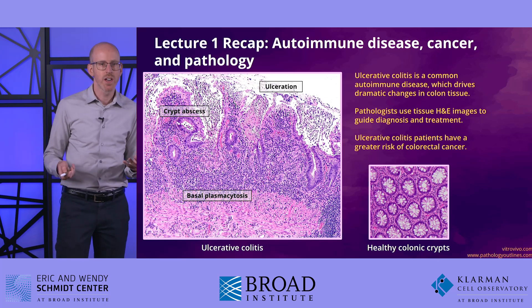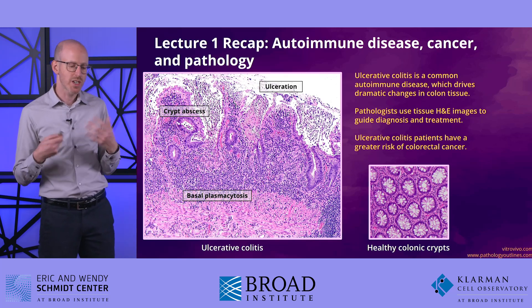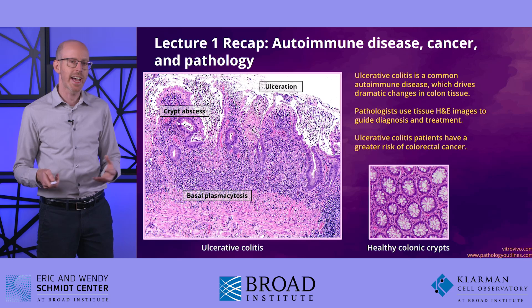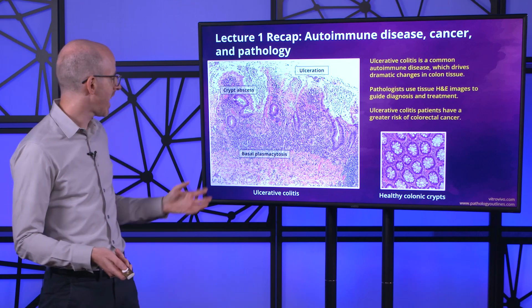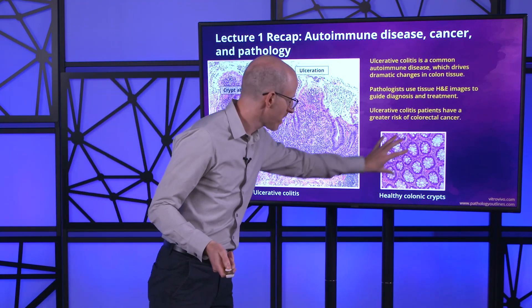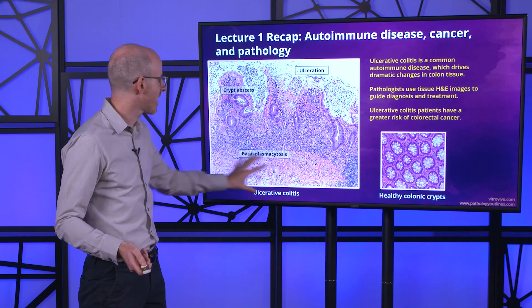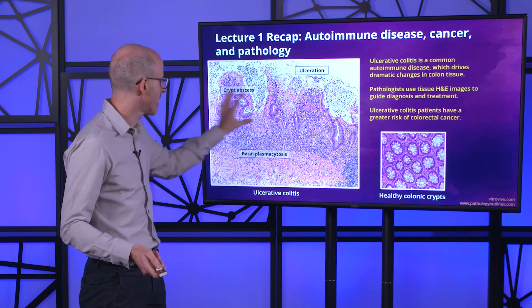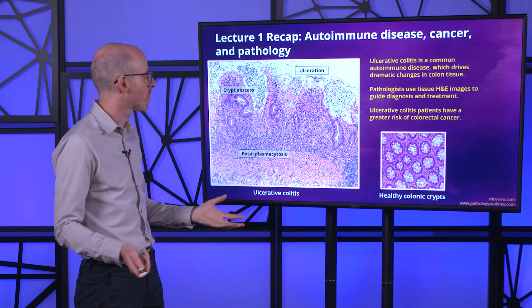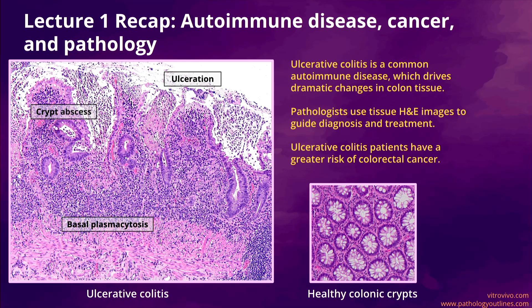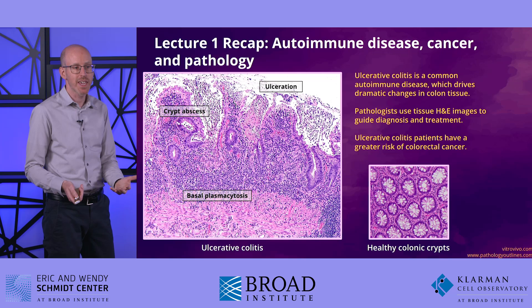In the first lecture, you got an introduction to autoimmune disease and learned about ulcerative colitis and how pathologists study ulcerative colitis tissue by doing H&E stains. Here again, we have this comparison between healthy colon — where you have these nice ordered crypts — and ulcerative colitis, where you're seeing inflammation and really massive changes in the tissue structure and organization. Pathologists can learn a lot from these images, but in the challenge we really want to move beyond that and ask: can we use these images to inform predictions about the development of cancer in these patients?